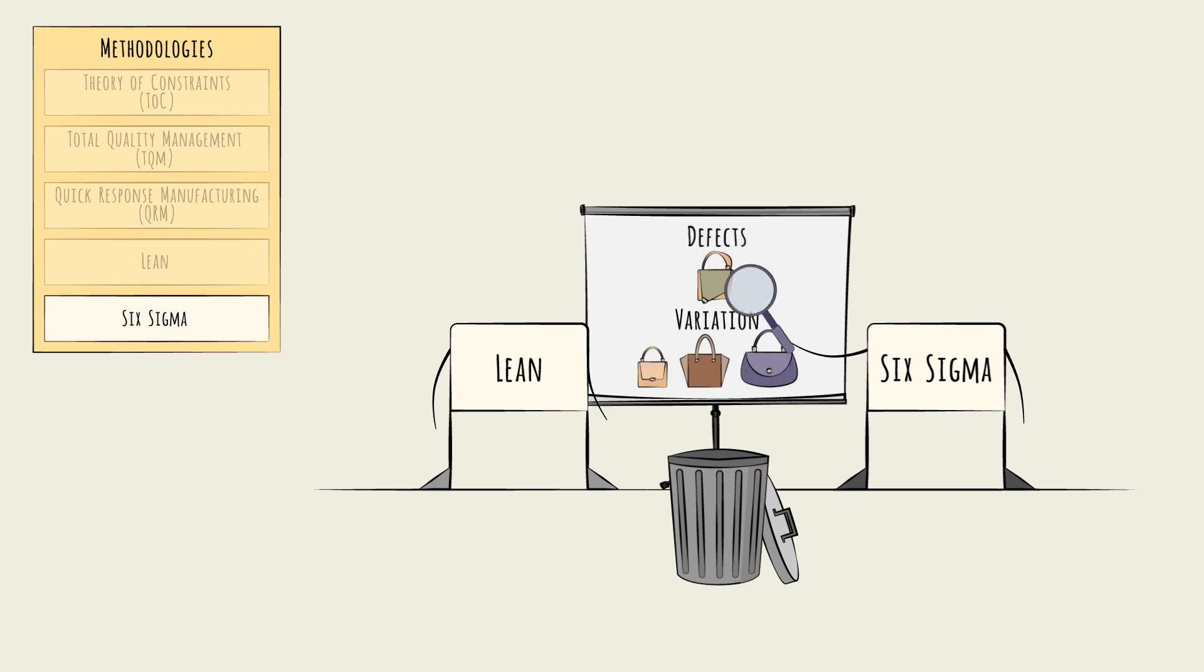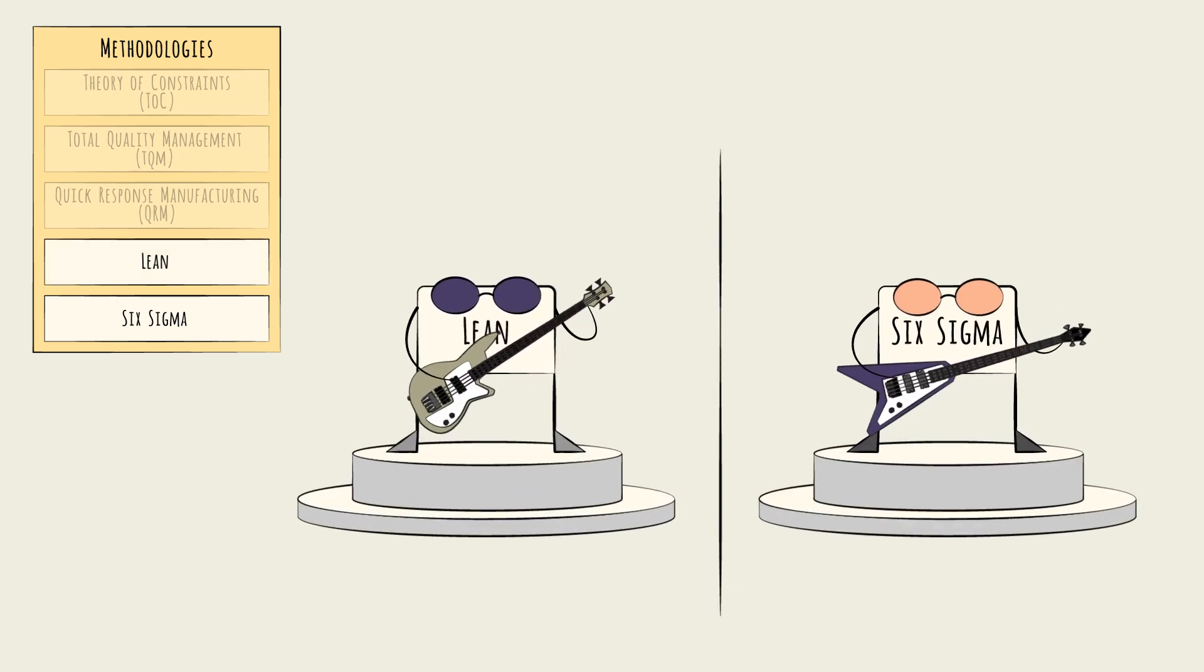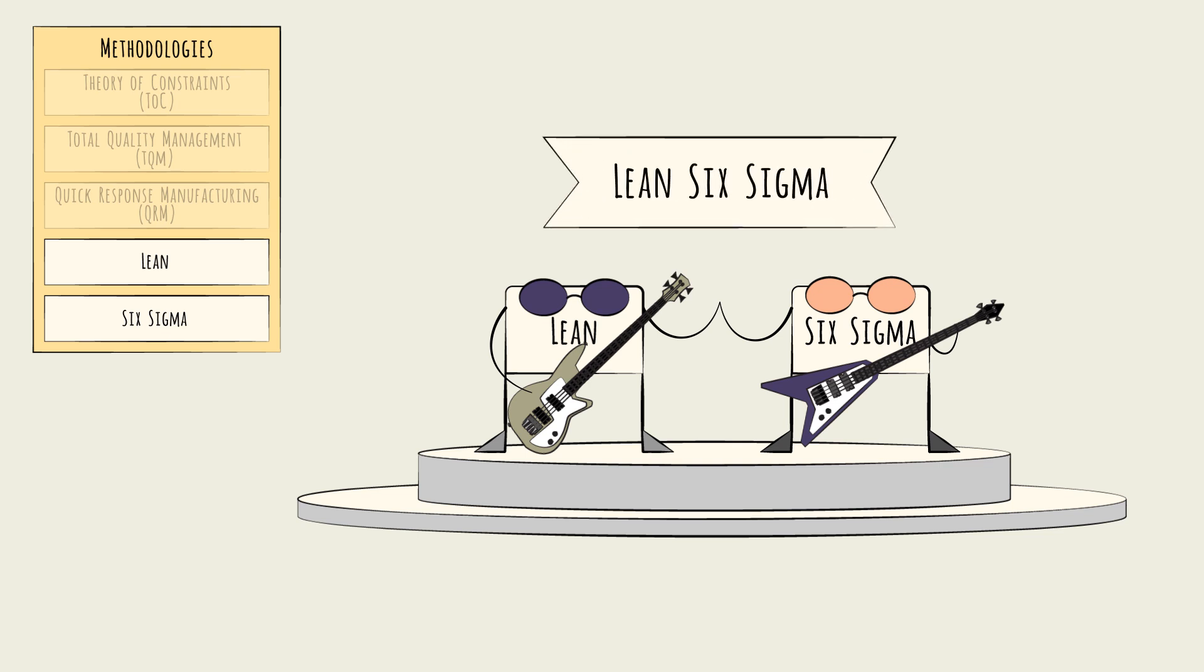Six Sigma focuses primarily on reducing defects and variation. Lean and Six Sigma are two separate stars here, and have successful solo careers in their own right. However, they also form a famous double act. The two schools are often combined via an approach known as Lean Six Sigma, which aims to reduce both waste and defects.